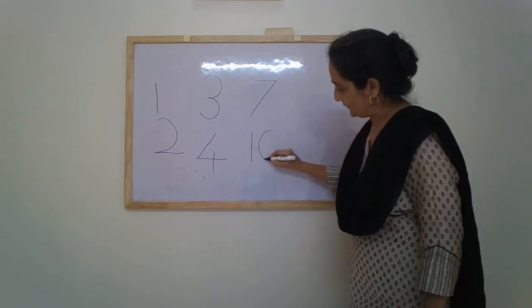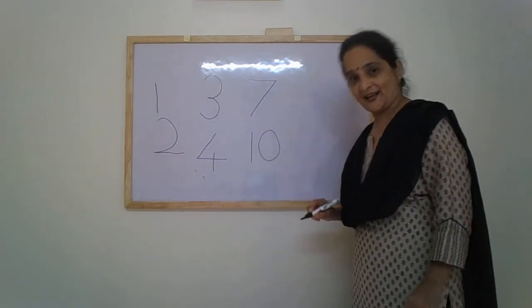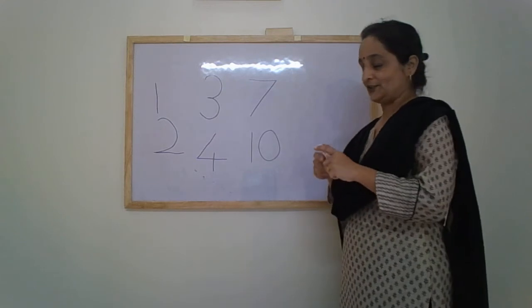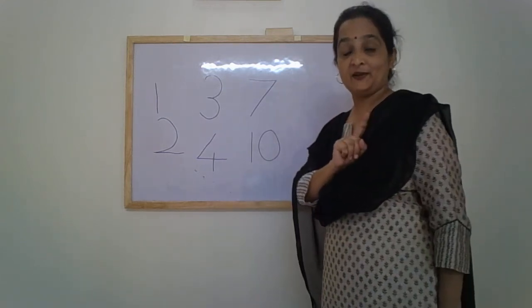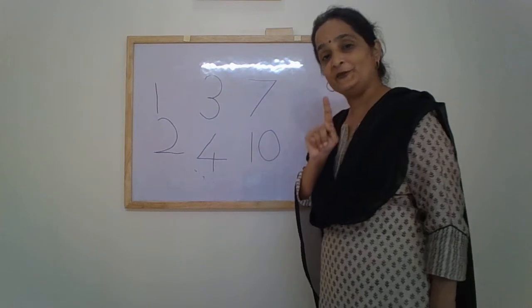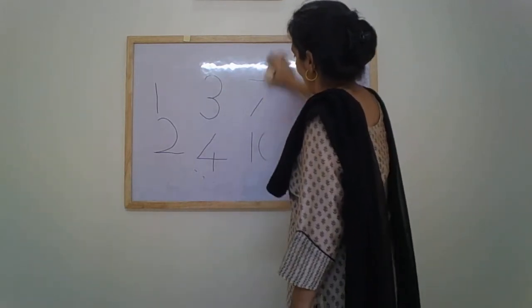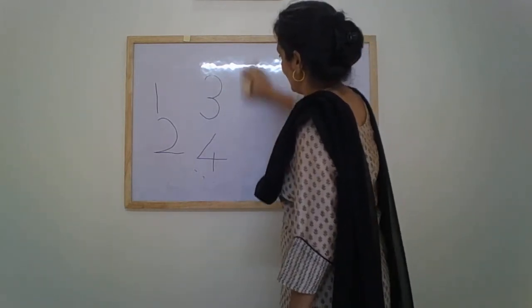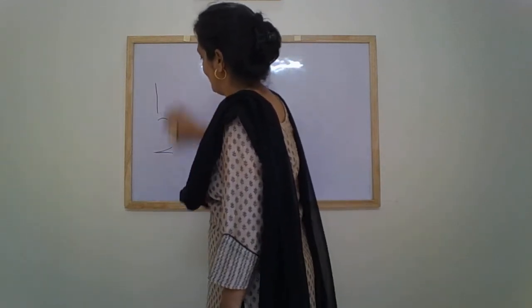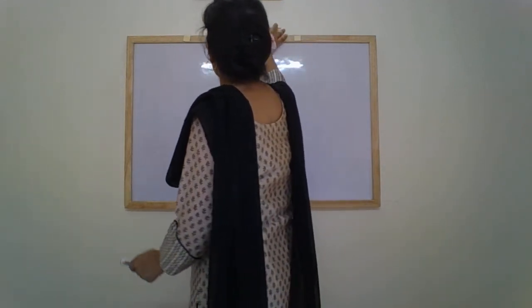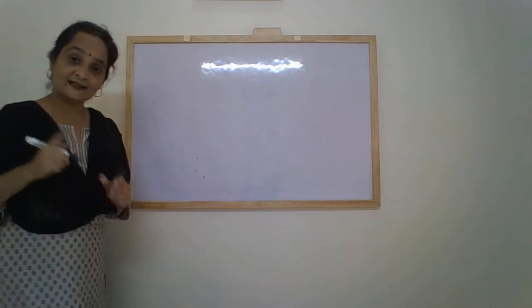1, 0 — so number 10. Children, now again I will write these numbers along with their values. Let's see how we write them. This time I am going to write the numbers a little bigger so that you can see them.